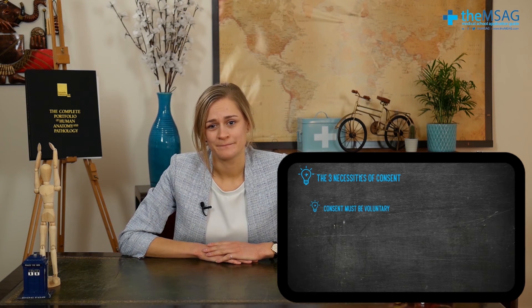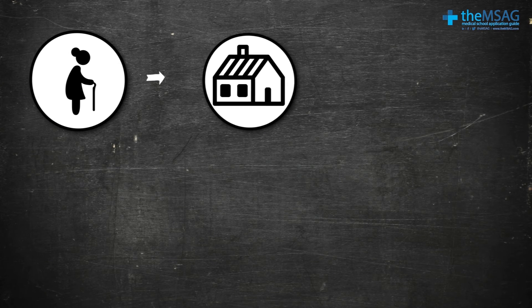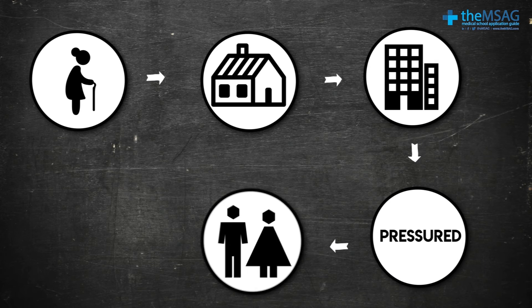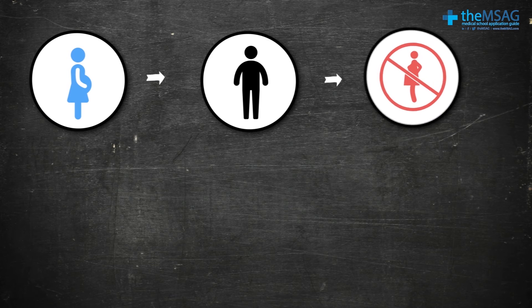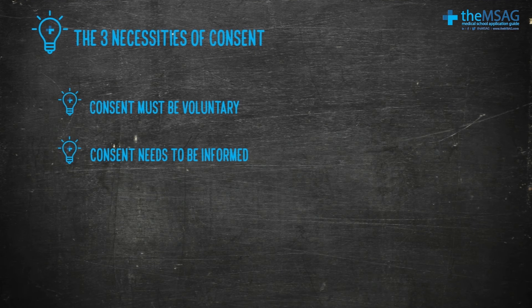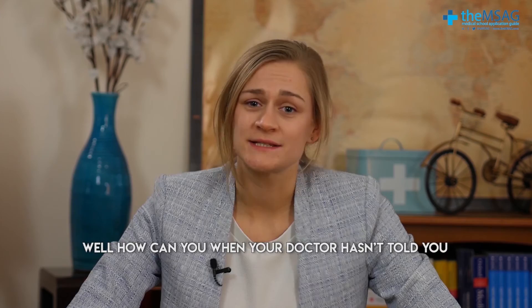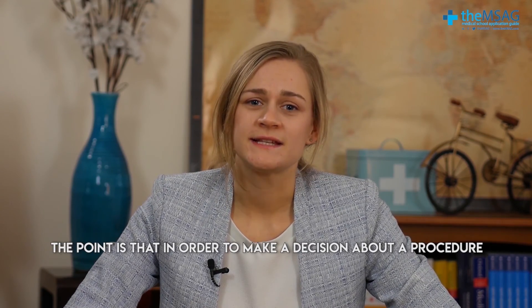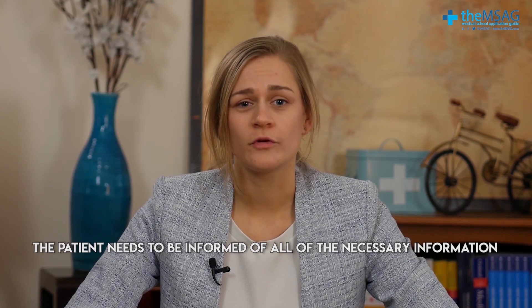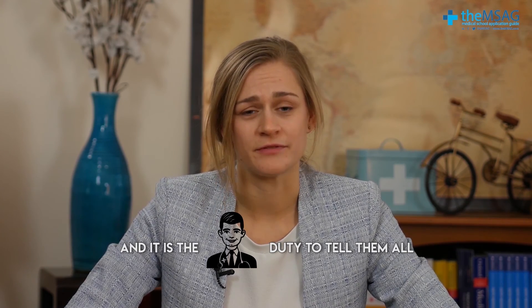Firstly, consent must be voluntary. When wouldn't it be voluntary? Well, consider an elderly patient consented to selling her house and moving into a residential home because she was being pressured by her family, or a woman being told by her partner to have an abortion even though she doesn't want to. Determining whether consent is voluntary is sometimes trickier than it first appears. The next thing consent needs to be is informed. Say you needed to have heart bypass surgery — how can you consent when your doctor hasn't told you anything about the procedure? You'll want to know why you need it, what the benefits are, and what the risks are. The patient needs to be informed of all necessary information, and it's the doctor's duty to tell them before they consent. This is why you'll often hear the term 'informed consent' being used.